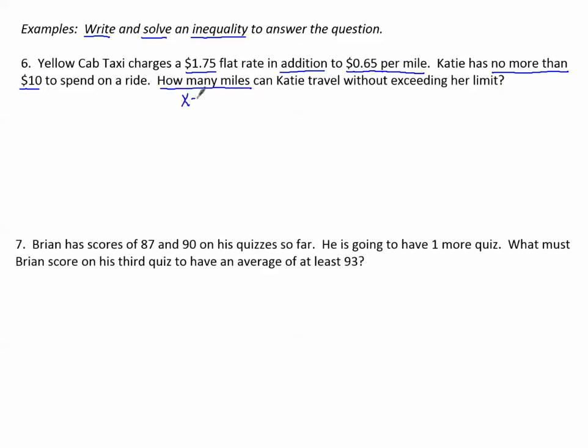How many miles? So let's call X the number of miles that Katie can travel. Now, no matter what, the taxi charges $1.75 flat rate. That means whether she drives 1 mile or 100 miles. So let's start with $1.75 in addition to, so add $0.65 per mile. So $0.65, and remember the per tells us that we're going to say times X often. And then she has no more than, which means she can spend $10 or less. So when I see no more than, that's a less than or equal to.